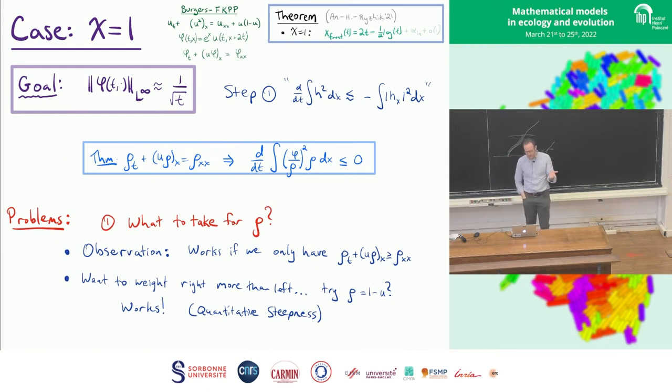So the first observation, which isn't particularly sophisticated, you go through their calculations and you notice that actually you don't need a solution, you just need a super solution. And then you sit there and you think, I need to weight the right more, I need something that's essentially one on the right and zero on the left. Well, u is one on the left and zero on the right, so like, you know, when you've been banging your head against a wall for a long time working on something, you get desperate, and you say, well, one minus u will be one on the right and zero on the left. So let's try it, let's plug it in. And by some miracle, it actually works. And the reason it works is all the error terms are terms you can control with that quantitative steepness argument.